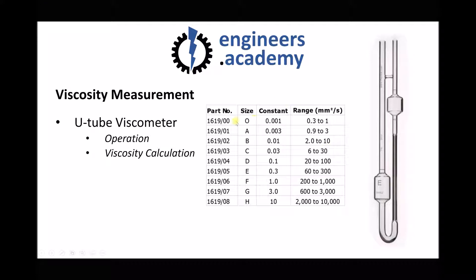There are various different viscometers represented by letters, and each viscometer comes with a viscometer constant. Each viscometer is also designed to measure between given ranges of kinematic viscosities. For example, with an E-type viscometer the constant is 0.3. We can determine kinematic viscosity using the formula: kinematic viscosity equals constant times timing in seconds. So with an E-size viscometer, we multiply 0.3 by the timing in seconds to get kinematic viscosity in mm² per second.